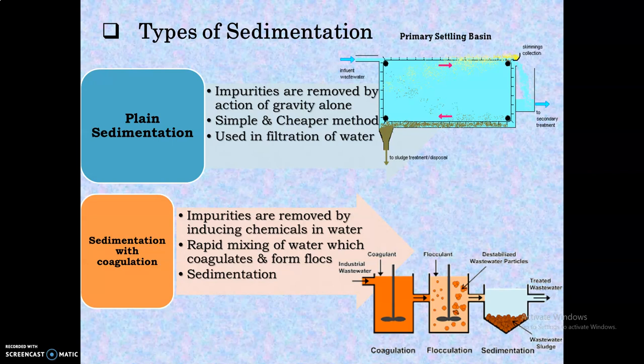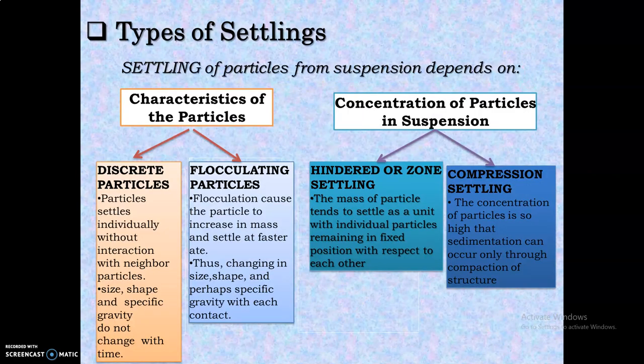Before studying the types of sedimentation, we should know the types of settling of particles — how particles actually settle down. Settling mainly depends upon the characteristics and concentration of particles in suspension. According to these, there are four types of settling: discrete particles, flocculating particles, hindered or zone settling, and compression settling.